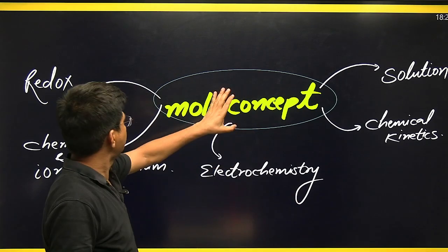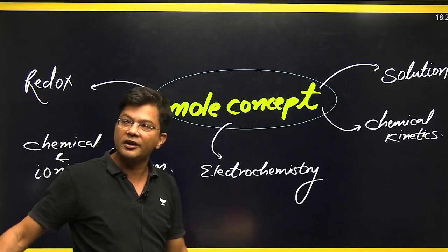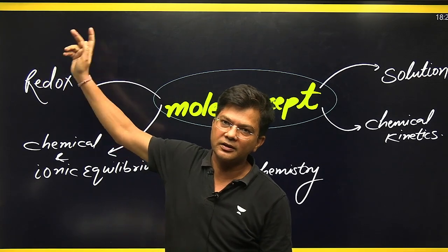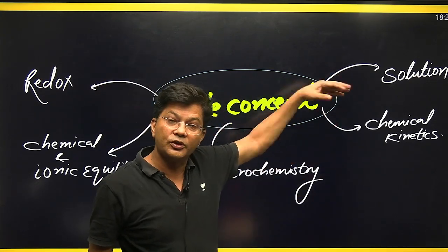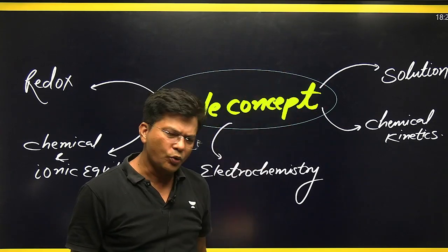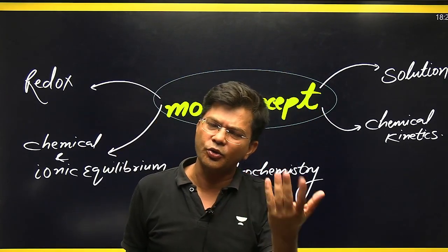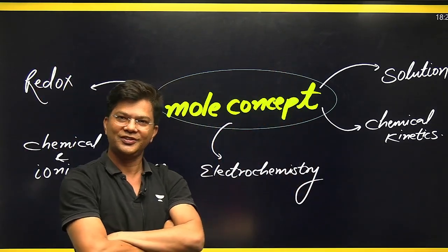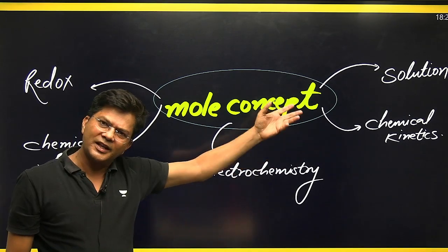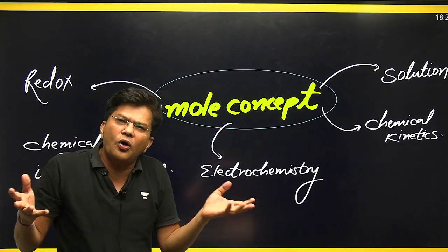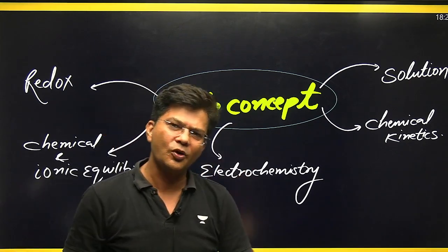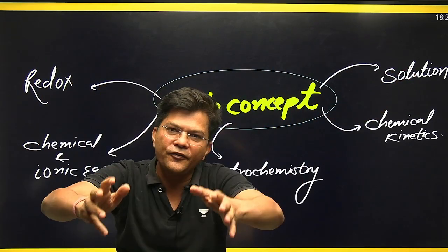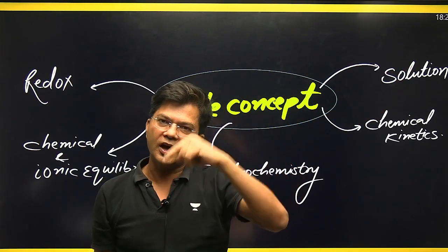Once mole concept is clear, your chemical and ionic equilibrium is clear, redox is clear. You also get benefit in chemical bonding, and the solutions chapter in class 12 is full-on mole concept — molarity, normality again. Chemical kinetics also uses concentration terms, and electrochemistry is fully based on mole concept. So once you clear mole concept, your whole physical chemistry including thermodynamics is done and dusted.